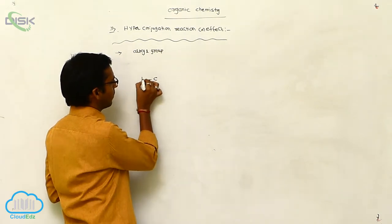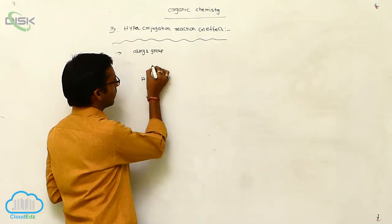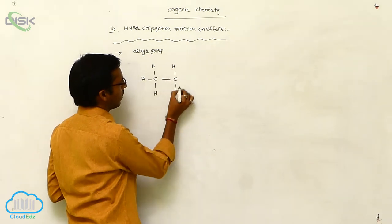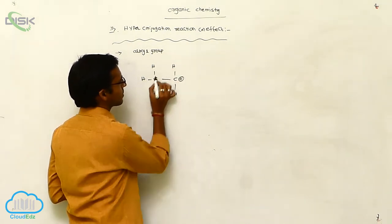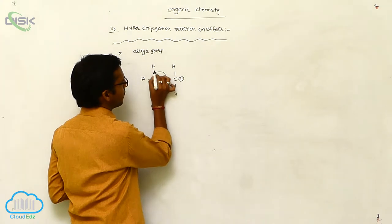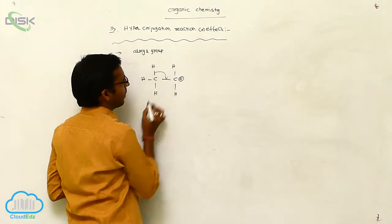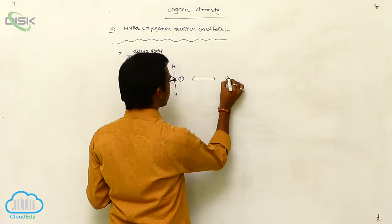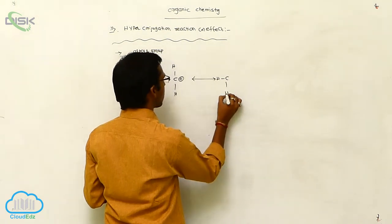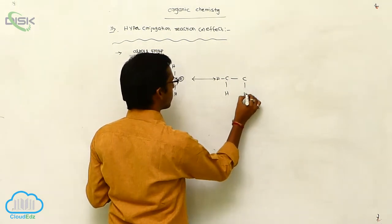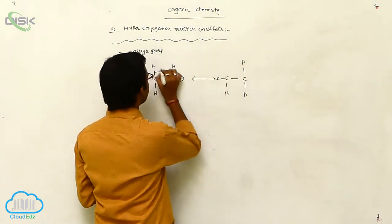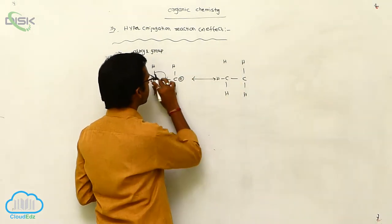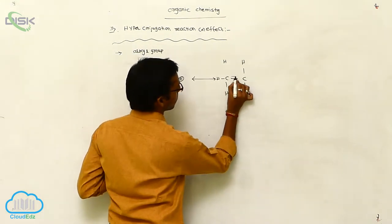For example, here a positive charge is present. Whenever the sigma bond is shifted to the adjacent position, you get a no bond resonance. The sigma bond is shifted here, getting one pi bond.